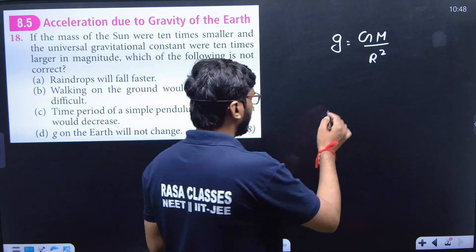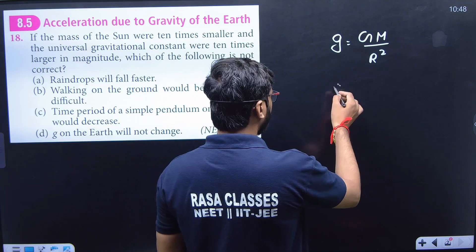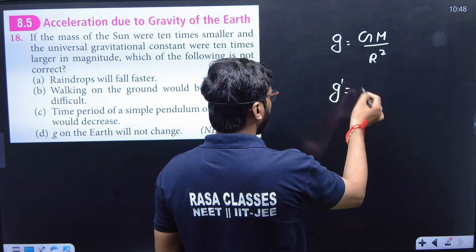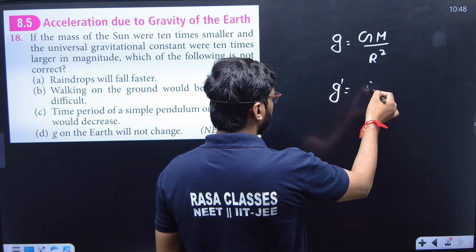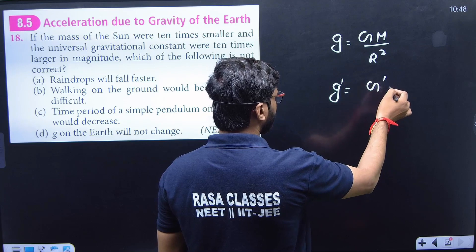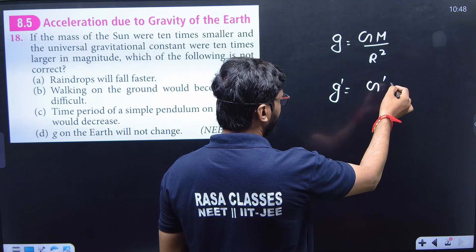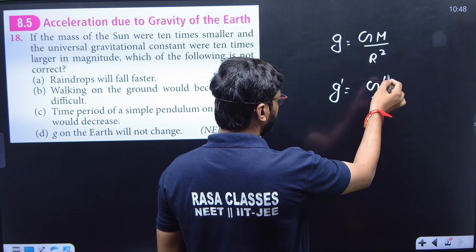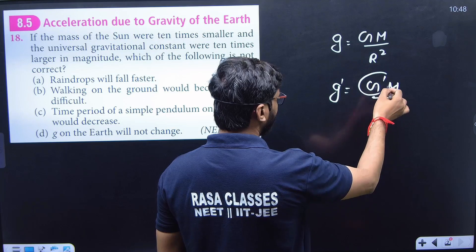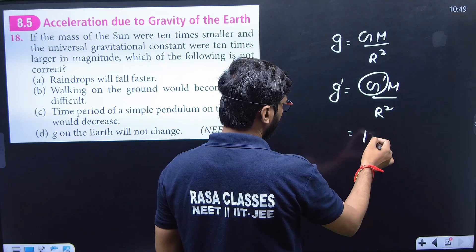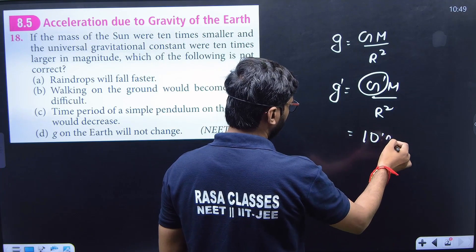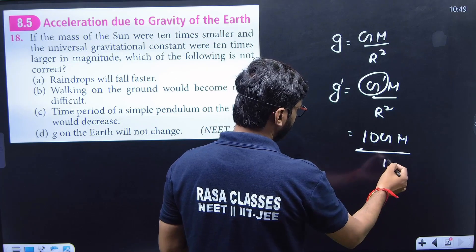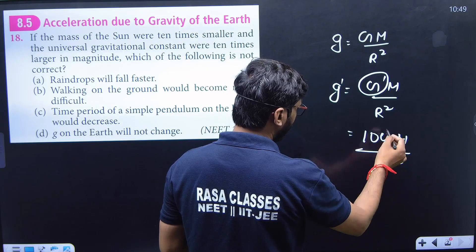If we calculate g = GM divided by R squared, with G being 10 times larger, this becomes 10G times M divided by R squared, which equals 10g. So g on the earth's surface remains 10G.